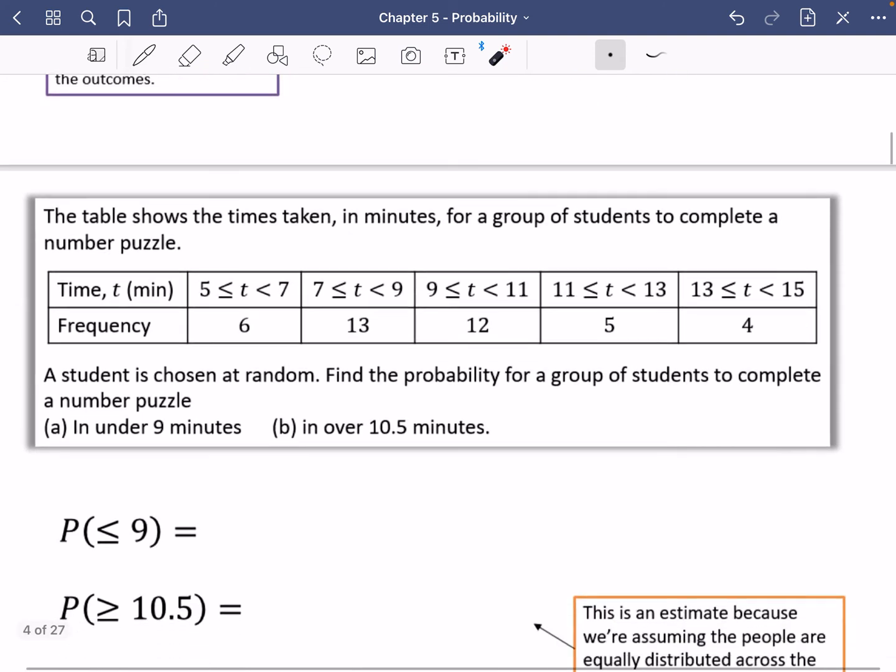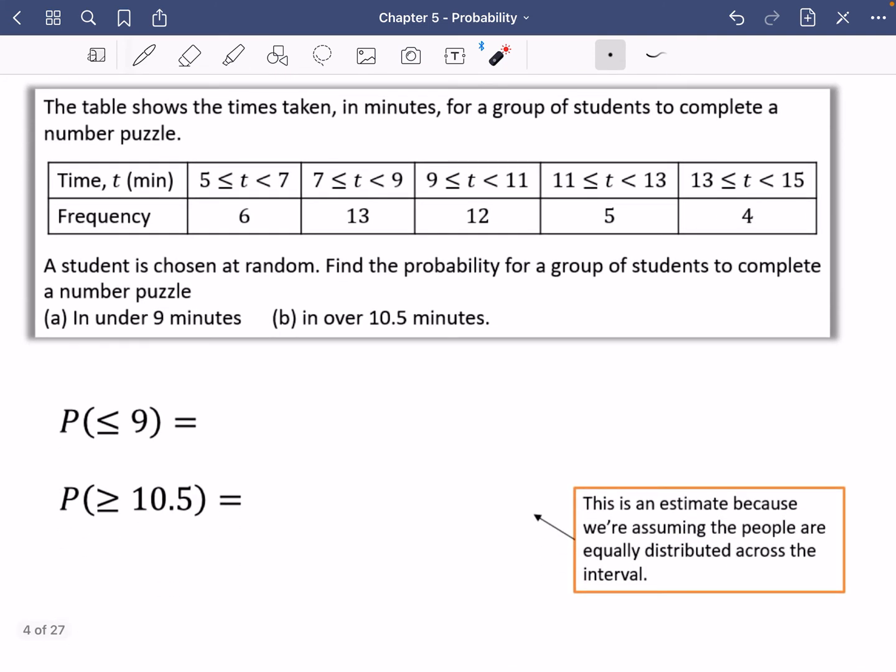We're going to do another one that is kind of similar but got a little bit of a twist on it as well. The table shows the times taken in minutes for a group of students to complete a number puzzle, maybe something like a Sudoku. You can see six of them did it between five and seven minutes, 13 of them did it between seven and nine. It says that a student is chosen at random. I guess it really should say that a student group is chosen at random because we're picking groups of students here. Find the probability for a group of students to complete a number puzzle in under nine minutes.